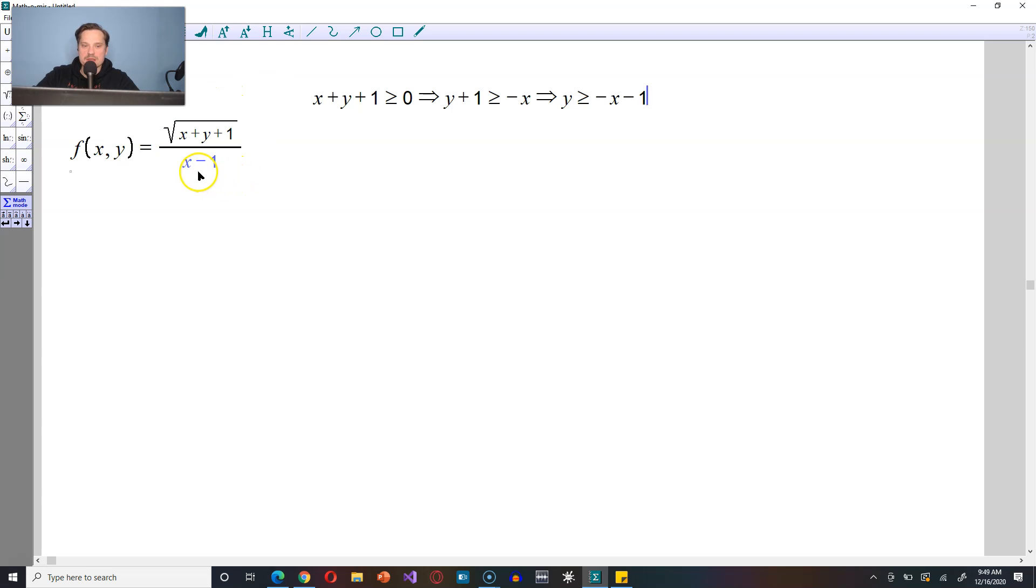However, there's one more condition here. You see, on the bottom, if you plug in x equals 1, you would always be dividing by 0. So that means the other condition is this: x-1 here cannot be equal to 0. Add 1 to both sides. What that tells you is that x cannot be equal to positive 1.